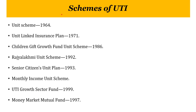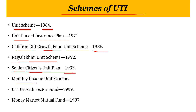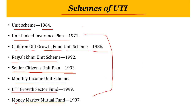Some of the schemes of UTI include: Unit Scheme 1964, Unit Linked Insurance Plan 1971, Children's Gift Growth Fund Unit Scheme 1986, Rajya Lakshmi Unit Scheme 1992, Senior Citizen Unit Plan 1993, Monthly Income Unit Scheme, UTI Growth Sector Funds, and Money Market Mutual Funds.